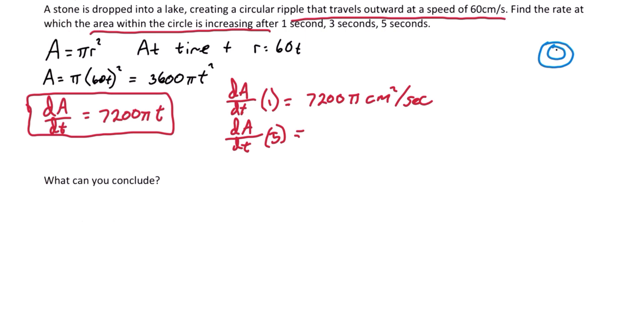And the derivative with respect to time at 3 seconds, plugging in the 3, we get 21,600 pi centimeters squared per second.